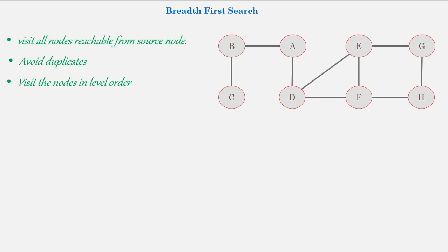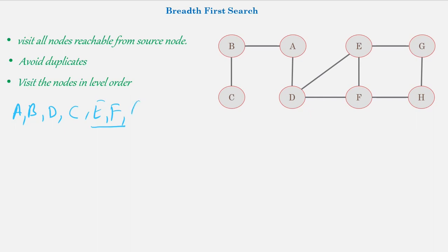First, visit the source node A. Then visit the neighbors of A, which are B and D. Next, visit the neighbors of neighbors: the neighbors of B are A and C — we skip A since it's already visited, so we only visit C. The neighbors of D are A, E, and F — we skip A and only visit E and F. Then we visit the neighbors of E and F, which are G and H. That is how we visit nodes in level order.